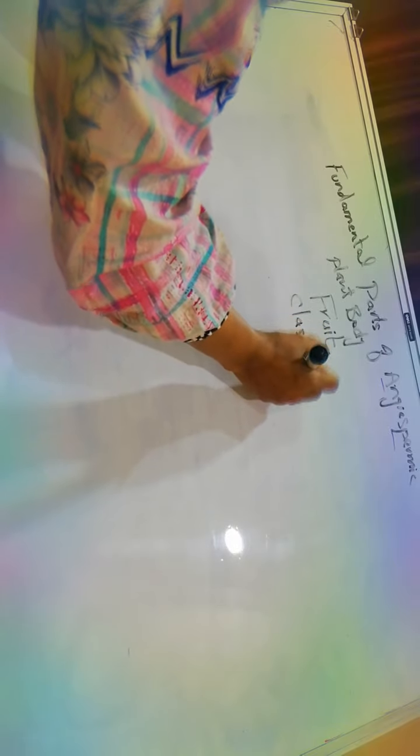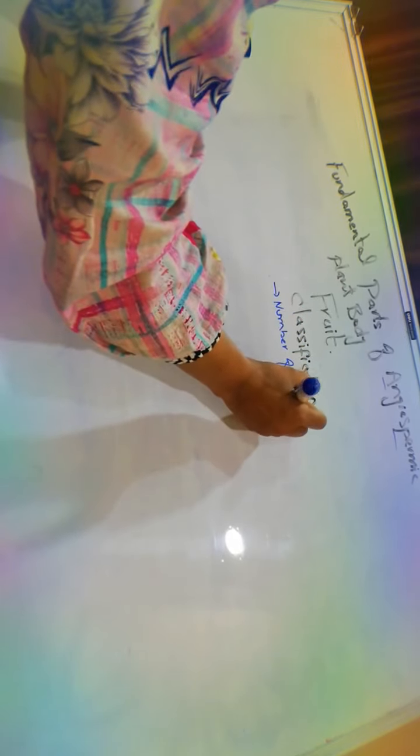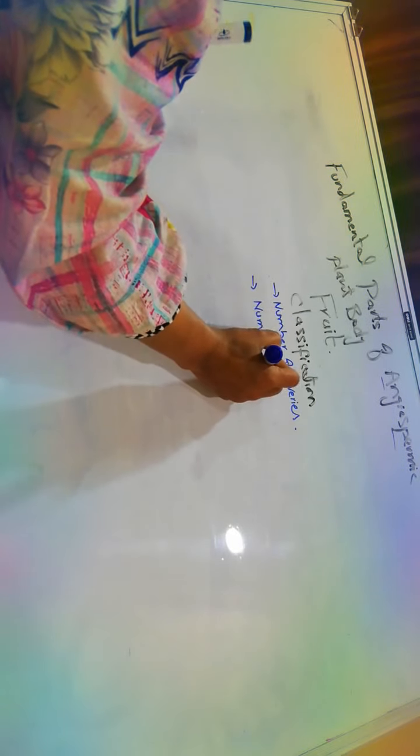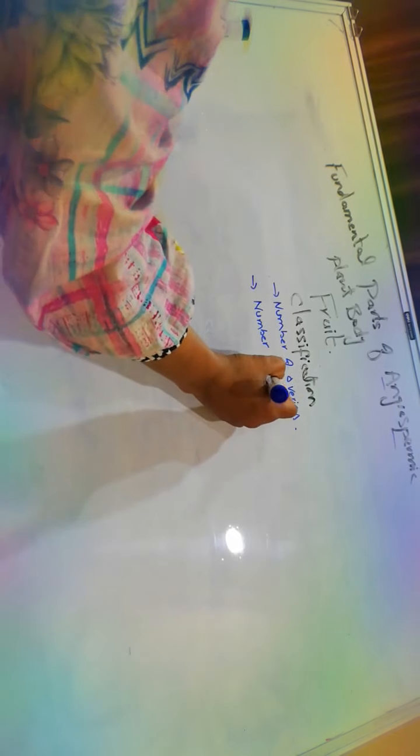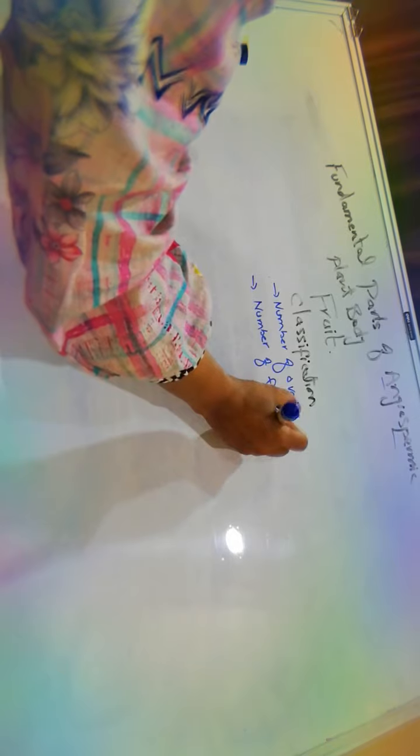Now we will discuss about the classification of fruits. This classification is basically on the basis of number of ovaries and number of flowers which are involved in their formation. How these are classified on the basis of number of ovaries and number of flowers which are involved in this process of fruit formation.